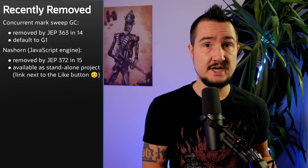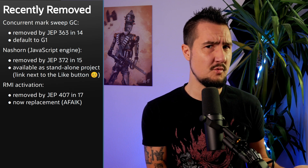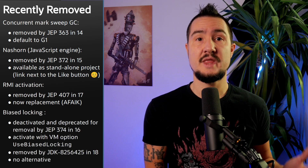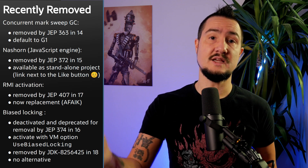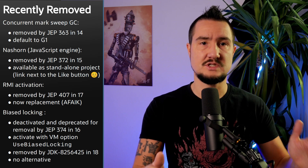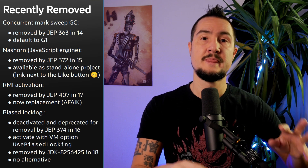There are a few technologies that projects on Java 11 or older might still be using but are already removed. The concurrent mark-sweep garbage collector was removed in 14 — in most cases, G1 is an equivalent or better replacement. The JavaScript engine Nashorn was removed in 15, but continues to exist as a standalone project — there's a link to their GitHub in the description. RMI activation was removed in 17; nobody seems to be using it anymore and as far as I'm aware there is no alternative technology. Biased locking was deprecated for removal and deactivated in 16, and removed in 18. You can still use it on 16 and 17 with the option UseBiasedLocking, but unless your code executes a lot of uncontested synchronized operations — which is almost exclusive to pre-Java 1.2 code — you won't see a performance benefit from turning it on. And that's it for deprecated and removed technologies.